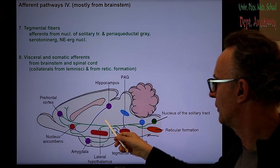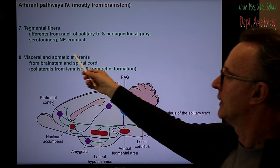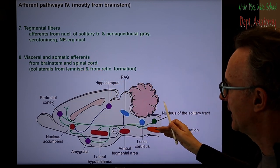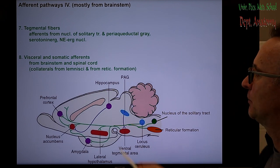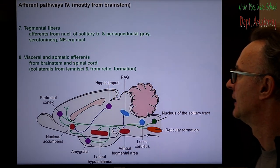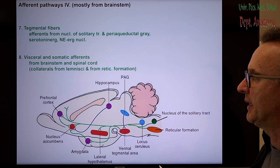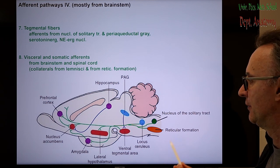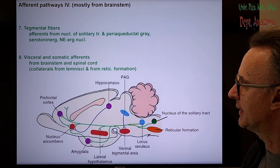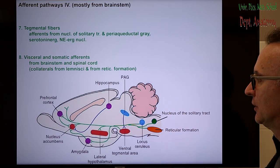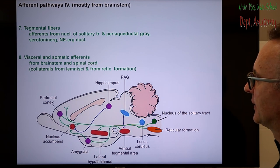Not only visceral sensory input reaches the hypothalamus — there are also somatic afferents. For example, a sharp pain may evoke vegetative reactions such as vomiting. The spinothalamic tract, as it ascends, gives collaterals to the hypothalamus; this is called the spinohypothalamic tract.